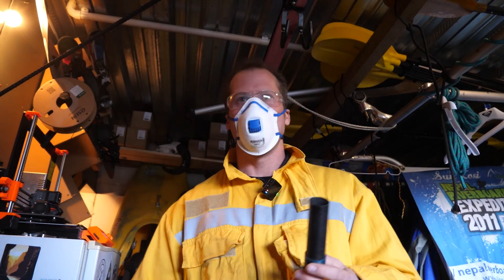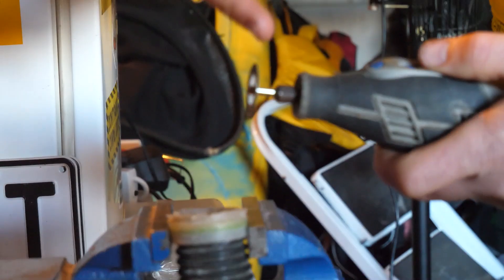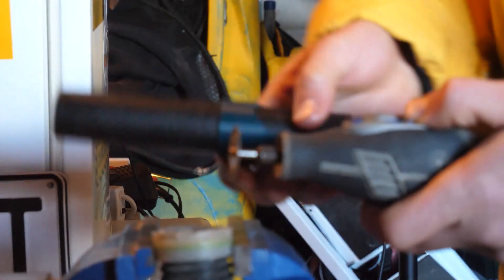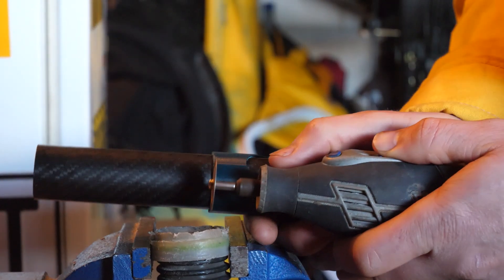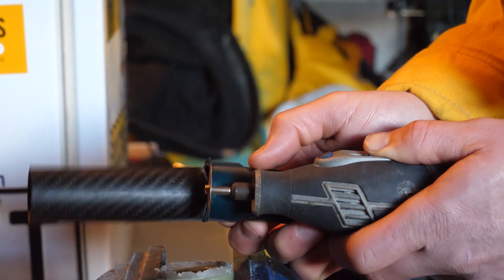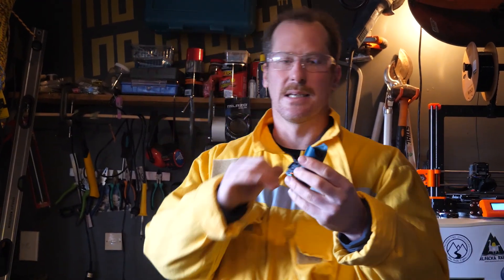All right we got our vacuum so it's time to cut. So we want to cut in this direction so the dust goes into the vacuum. It's time to do a miter cut here on our 80mm tubes.